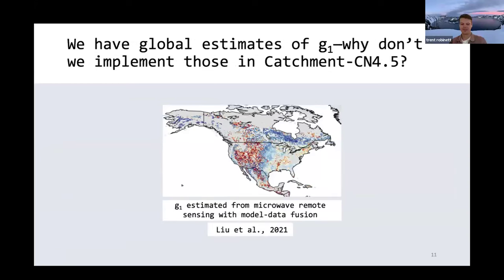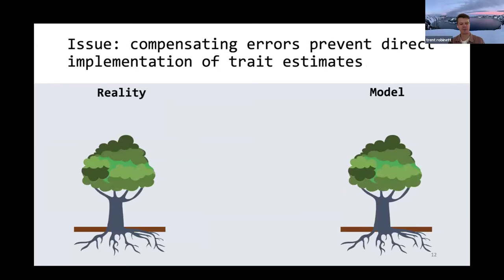I think the first thing that's important to acknowledge is that we have global estimates of g1. So if we want to move beyond plant functional types, why don't we just take them and implement those directly into Catchment-CN4.5? But something that many of you might be familiar with called compensating errors is going to prevent us from doing that.